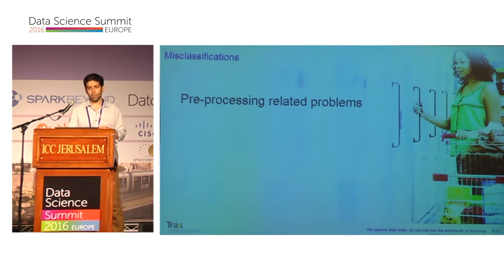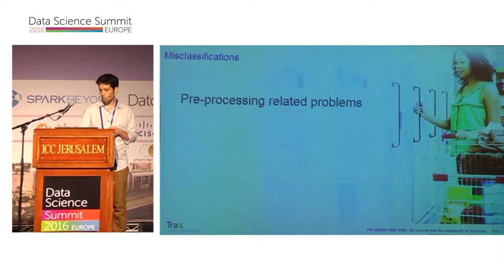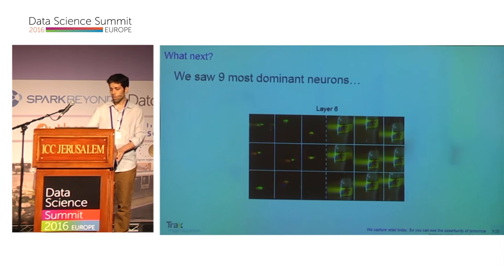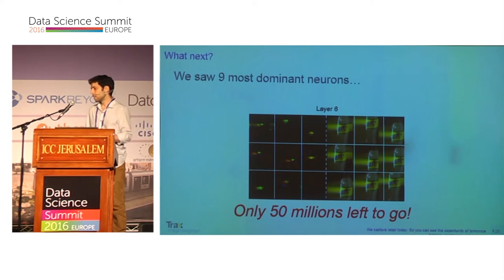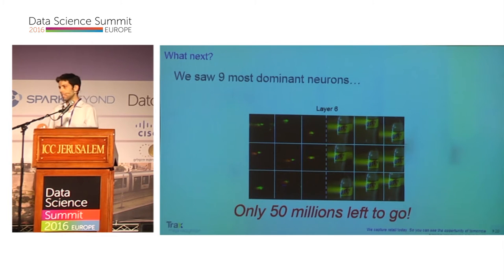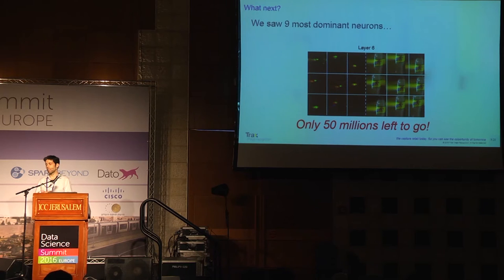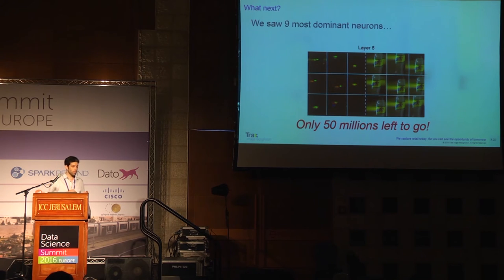So the first reason for misclassification might be preprocessing-related problems — sometimes related to input image aspect ratio, resize method, or padding method. One limitation of this method is that even looking at the nine most dominant neurons, there are many more left to go, and this is not a scalable view.